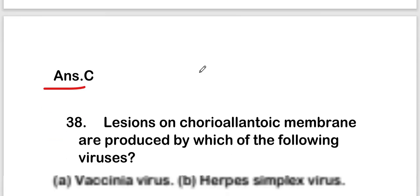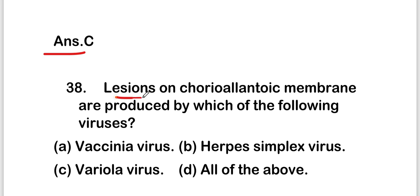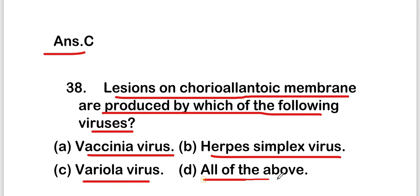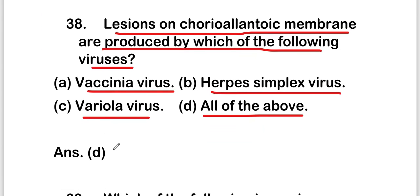The next question: lesions on the chorioallantoic membrane are produced by which of the following viruses — vaccinia virus, herpes simplex virus, variola virus, or all of the above? The right answer is option D, all of the above. Lesions on the chorioallantoic membrane are produced by all of these viruses.